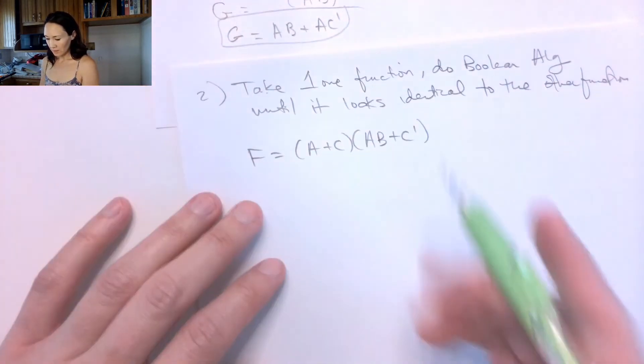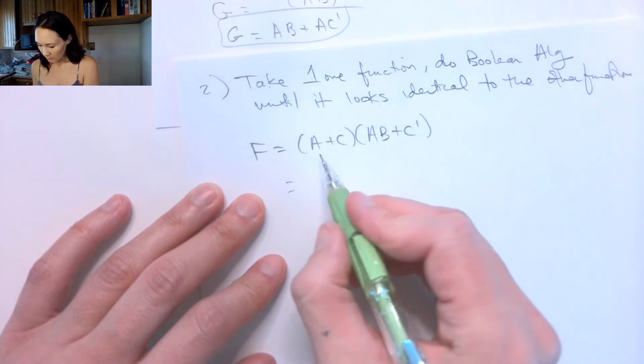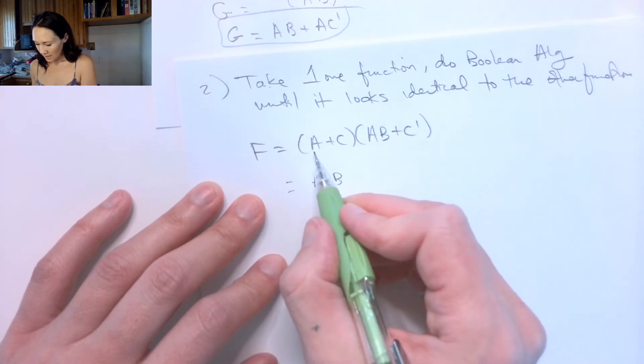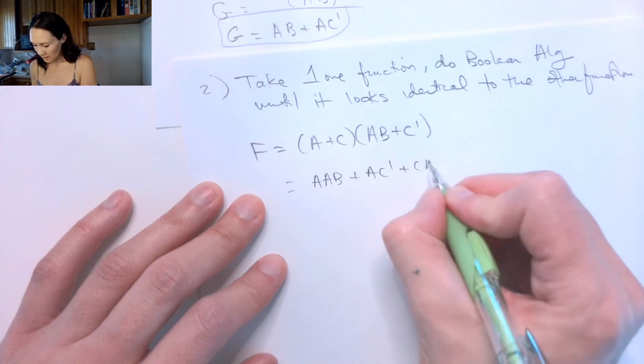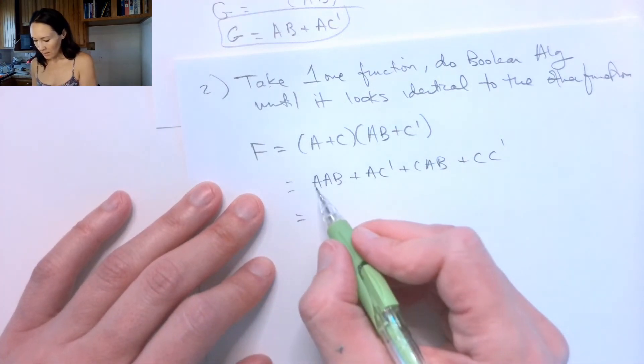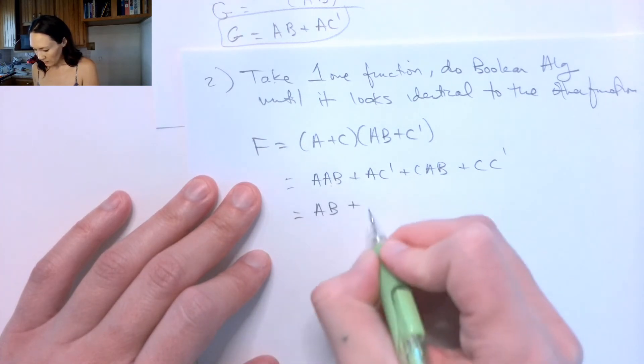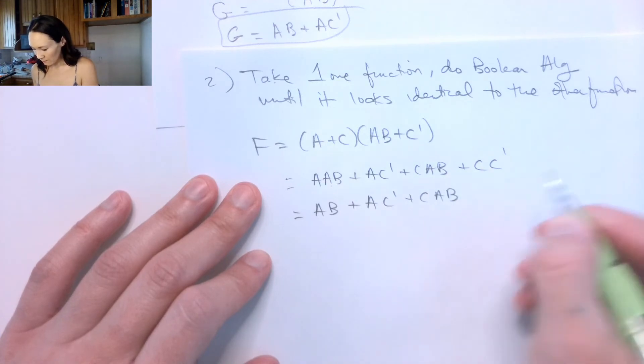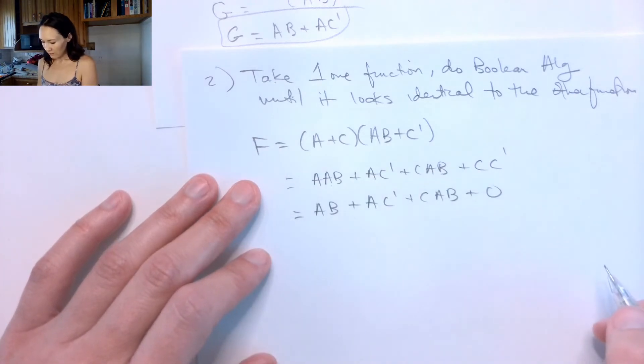Okay, great. So first thing I'm going to do is I'm going to distribute this function. This is going to give me, if I FOIL it: A times AB, the outside is AC', the inside is C·AB, and the last is C·C'. Now A AND'd with A is just A, so I can just write one A here. This is AC'. This is CAB. C AND'd with C' is just zero.